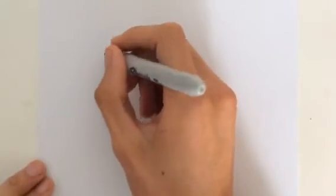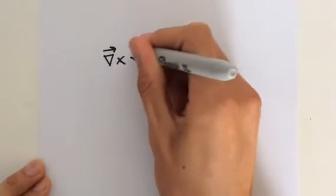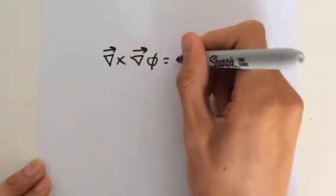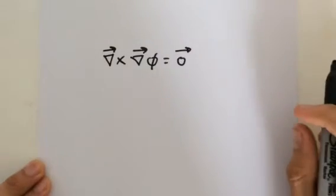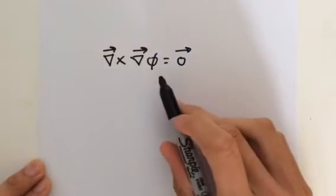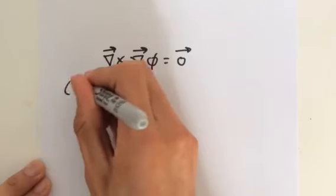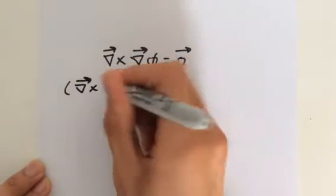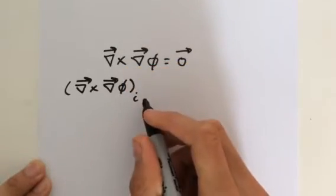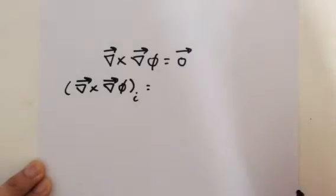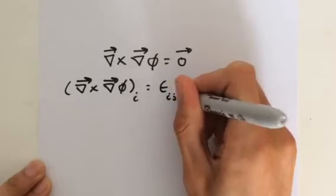Our first equation we're going to prove is the curl of the gradient is zero — and zero is a vector because the curl produces a vector. Now let's take the i component of this vector. We can use the Levi-Civita symbol, where i, j, and k are indices.